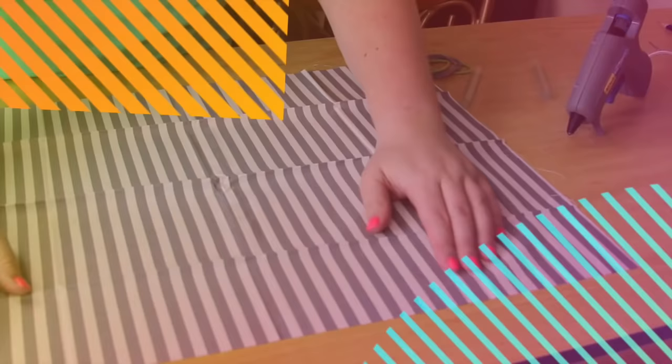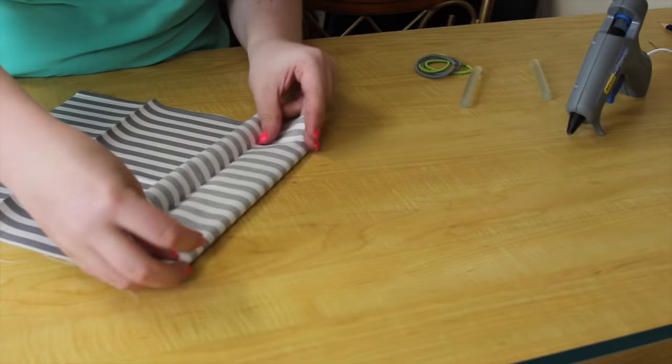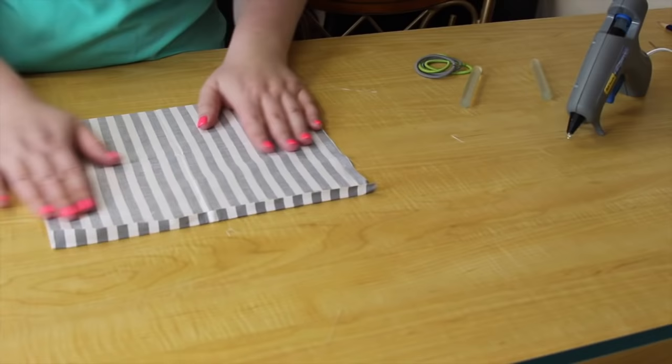So step one, open up your fabric, depending on how much you have, and figure out about how wide you want the bow tie to be. So that was about how wide I wanted it. Then you're going to want to figure out how high you want the bow tie to be. So that's about how high I wanted it. I folded it into thirds.